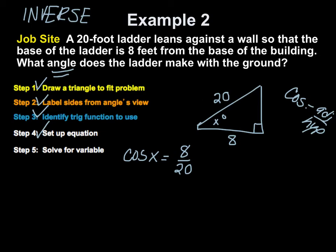So, 8 divided by 20 is 0.4. So, I've got cosine of x is equal to 0.4. That's going to make it a little easier for me. Now, the next step is to use the inverse function. So, we are going to use the inverse function for cosine. So, on your calculator, you're going to use the second key and then hit cosine.